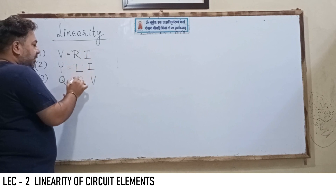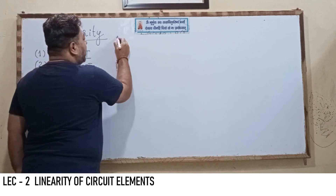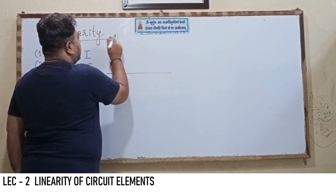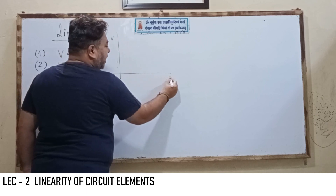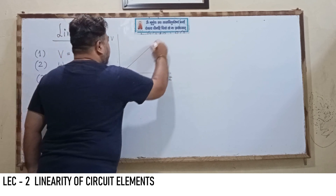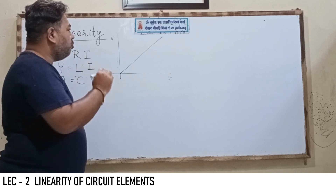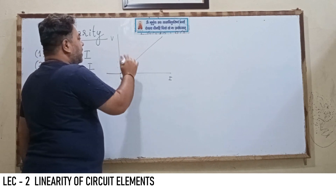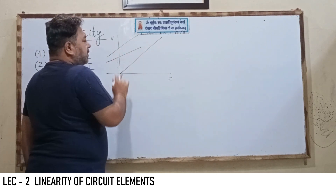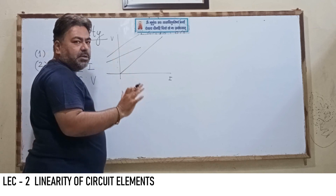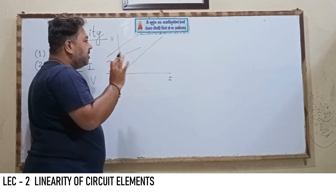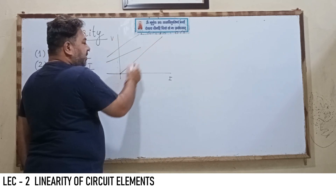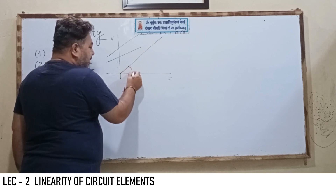A resistance is said to be linear if its VI characteristic is linear. If I take voltage on the y-axis and current on the x-axis, the characteristic should be a straight line passing through the origin — then it is said to be a linear resistor. Any other straight line not passing through the origin is not representing a linear resistor.